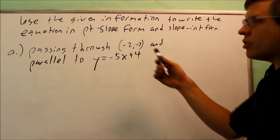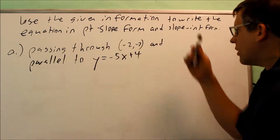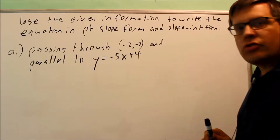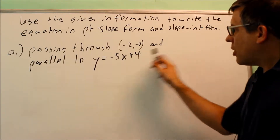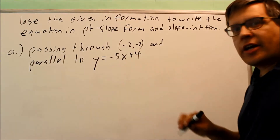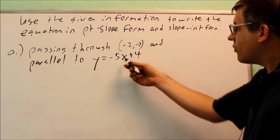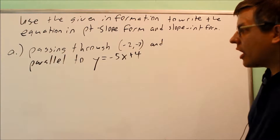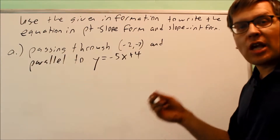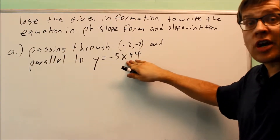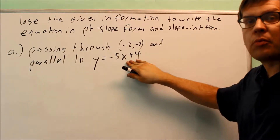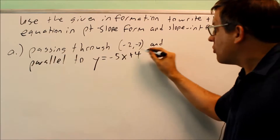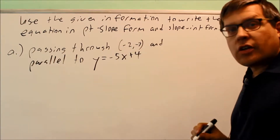Here is the given information to write the equation in point-slope form and slope-intercept form. We're given that it's passing through negative 2, negative 7, and it must be parallel to the line with equation negative 5x plus 4. Parallel means we want to come up with an equation that has the same slope as this one — another line with the same slope that also passes through negative 2, negative 7.